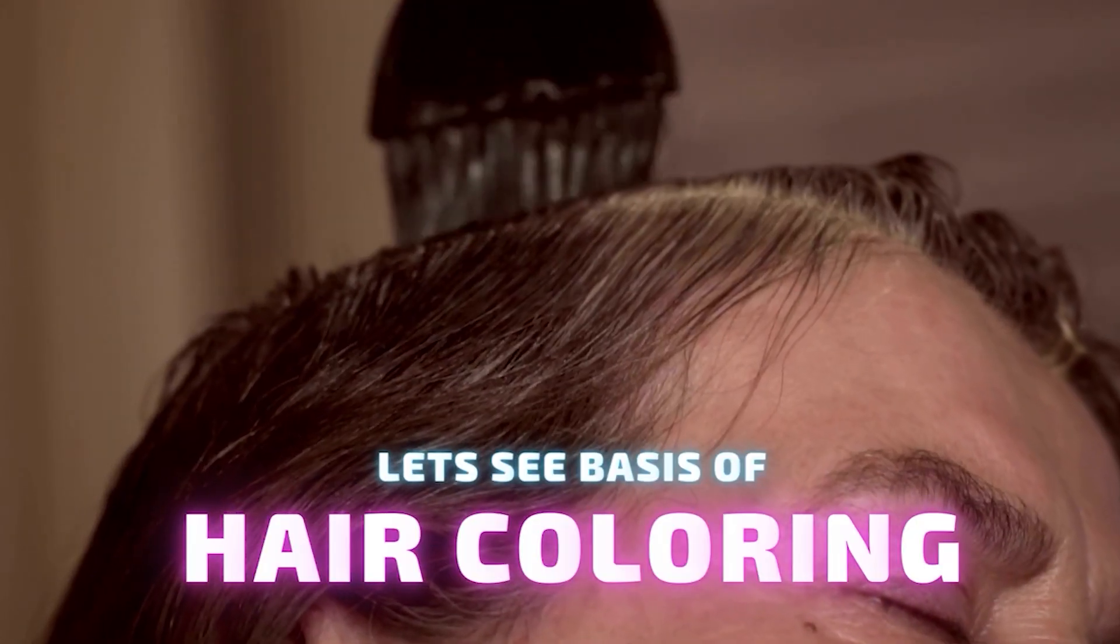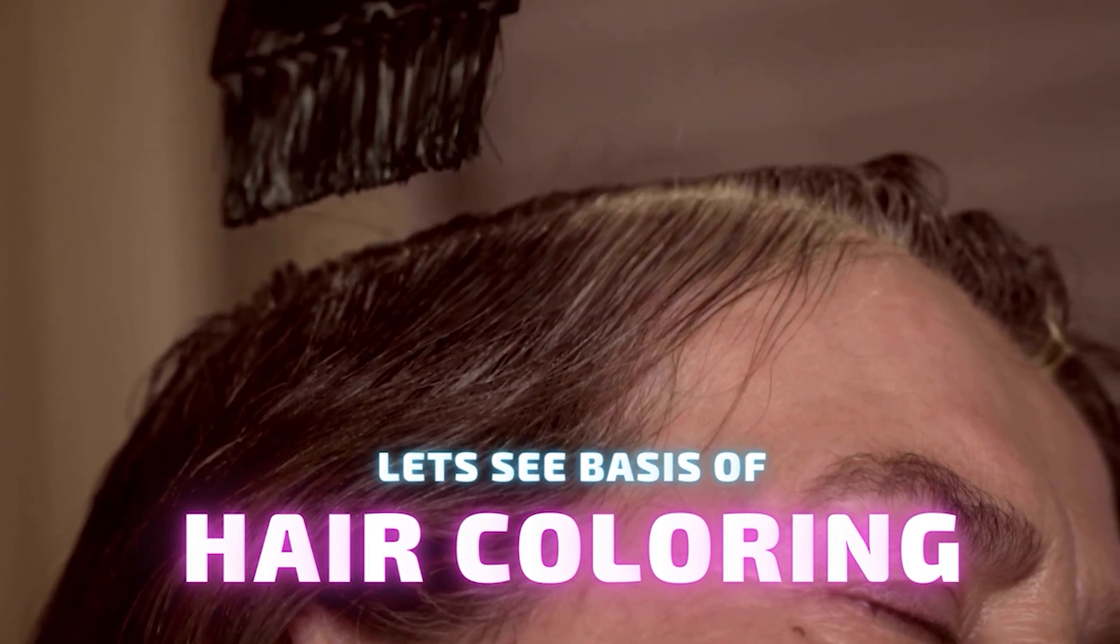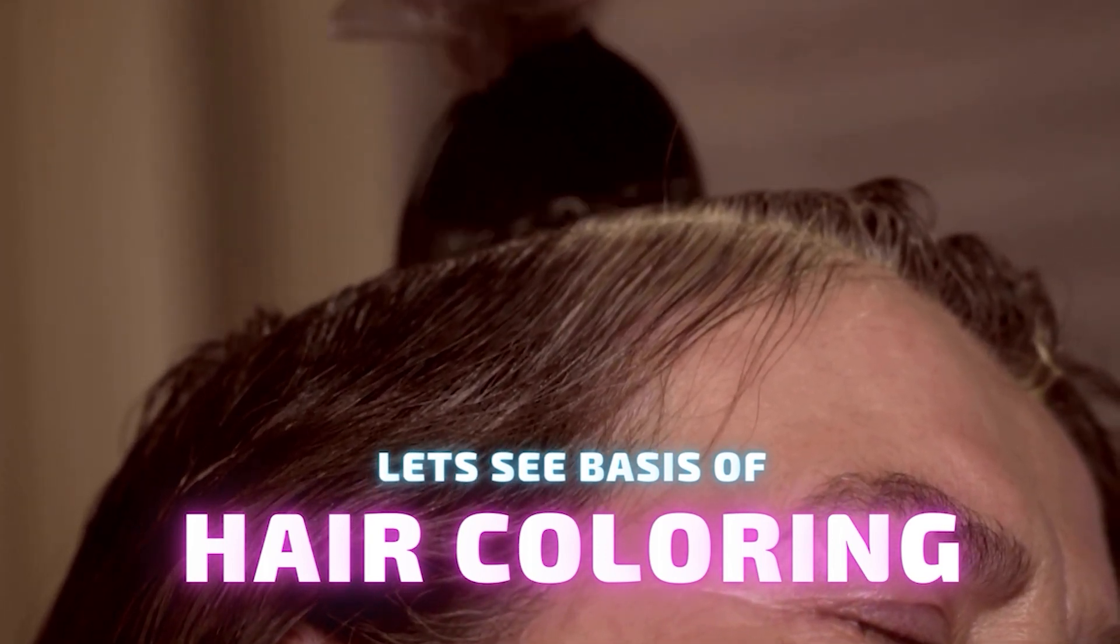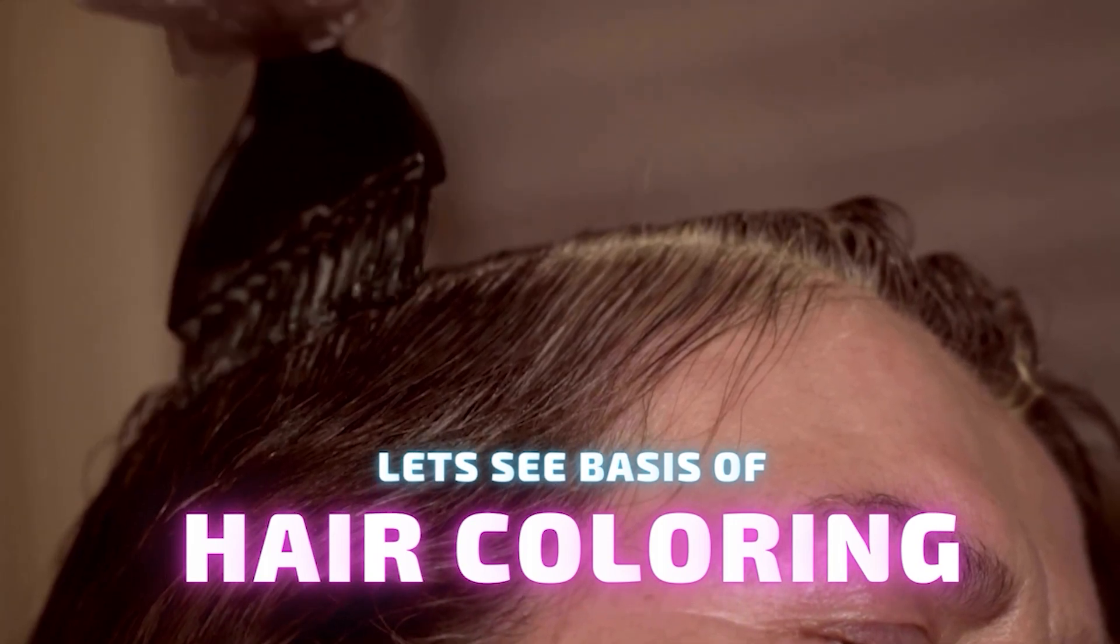This is not my natural hair color - this is hair dye applied. There are three basic chemical formulations of hair dye: temporary, semi-permanent, and permanent. Before we look at what each of them do, let's look at the physical structure of hair.